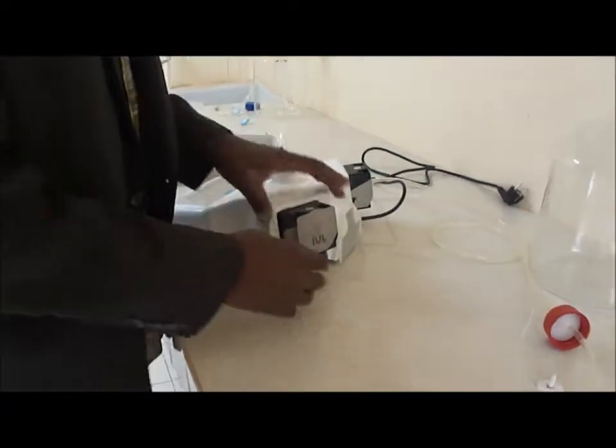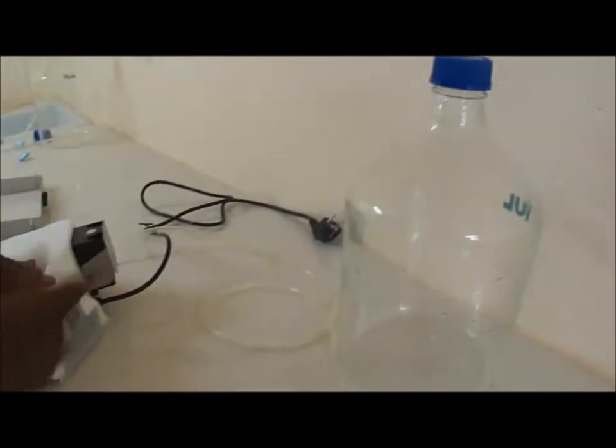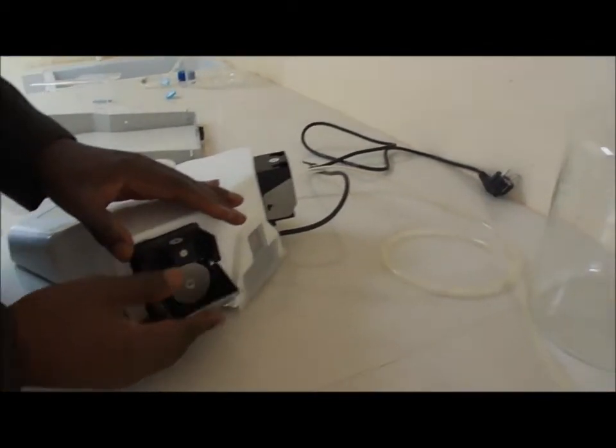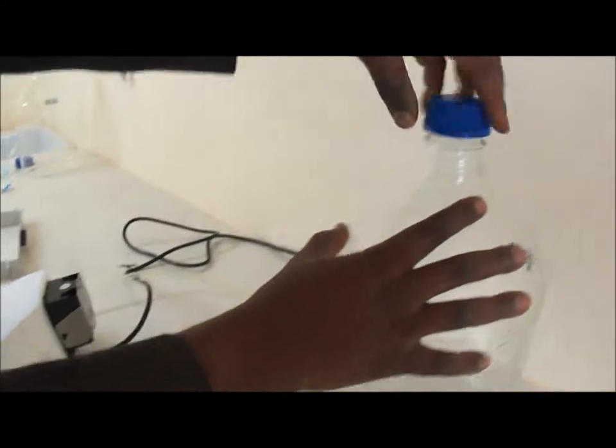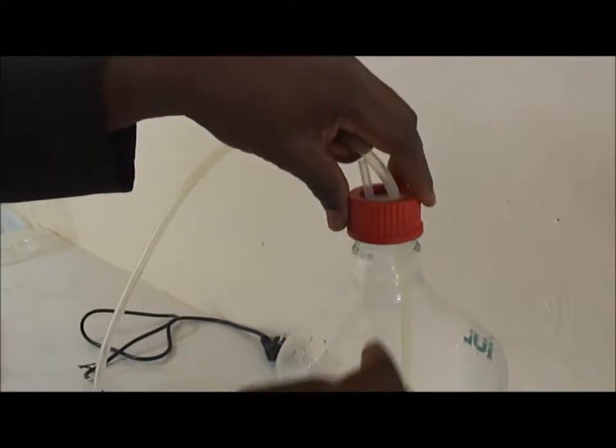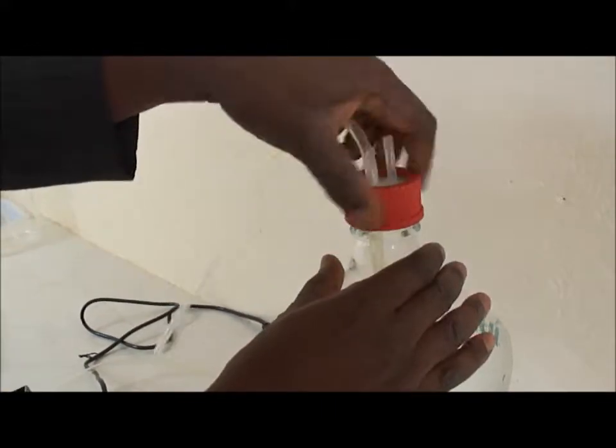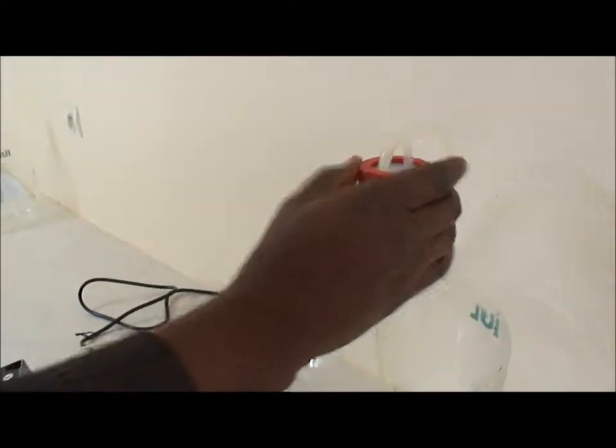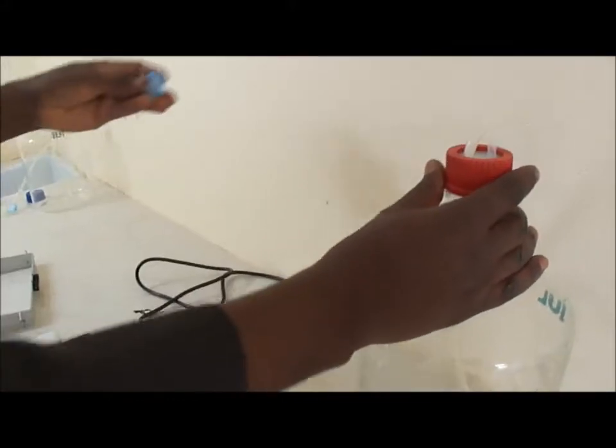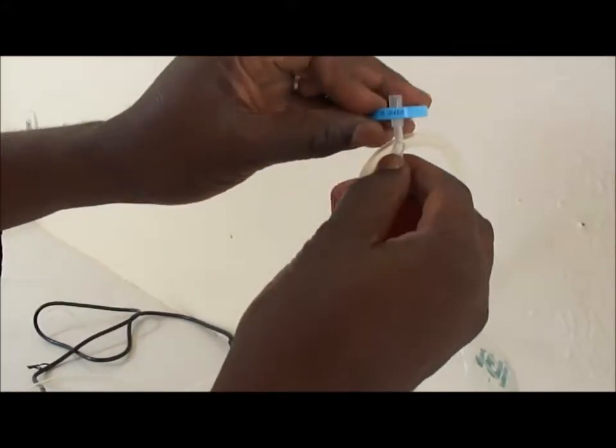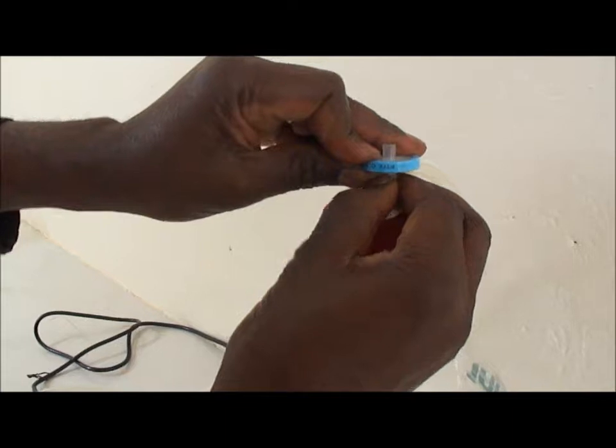Now we will show how to mount the bottle, one of the bottles to the first pump. You first remove the plug, the blue plug, and then you insert the red plug and screw it firmly. You mount one of the air filters on the top here, and that's it.